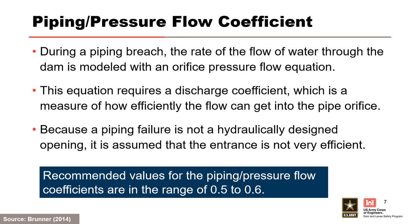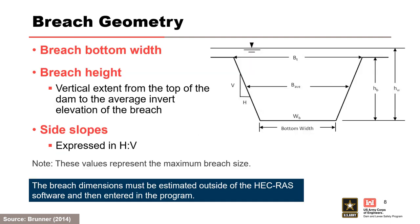Because a piping failure is not a hydraulically designed opening, it is assumed that the entrance is not very efficient. Recommended values for the piping slash pressure flow coefficients are in the range of 0.5 to 0.6. The physical description of the breach in HEC-RAS consists of the height of the breach, breach width, and side slopes in horizontal to vertical ratio. These values represent the maximum breach size and must be estimated outside of HEC-RAS and entered into the program. Many regression equations discussed later use the average breach width, but HEC-RAS requires the breach bottom width for input.